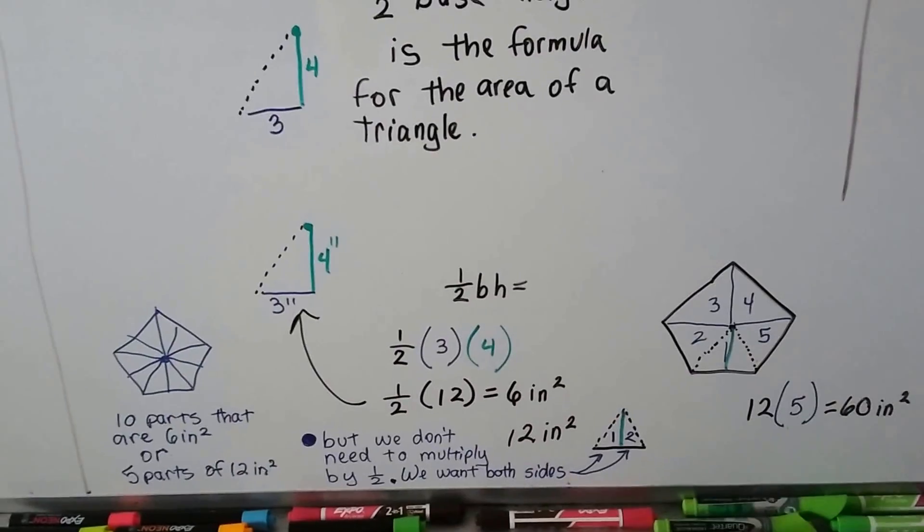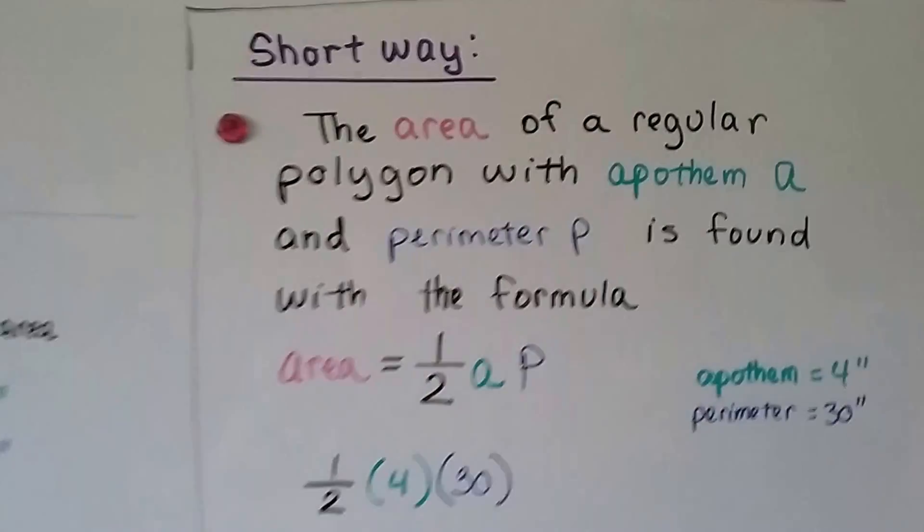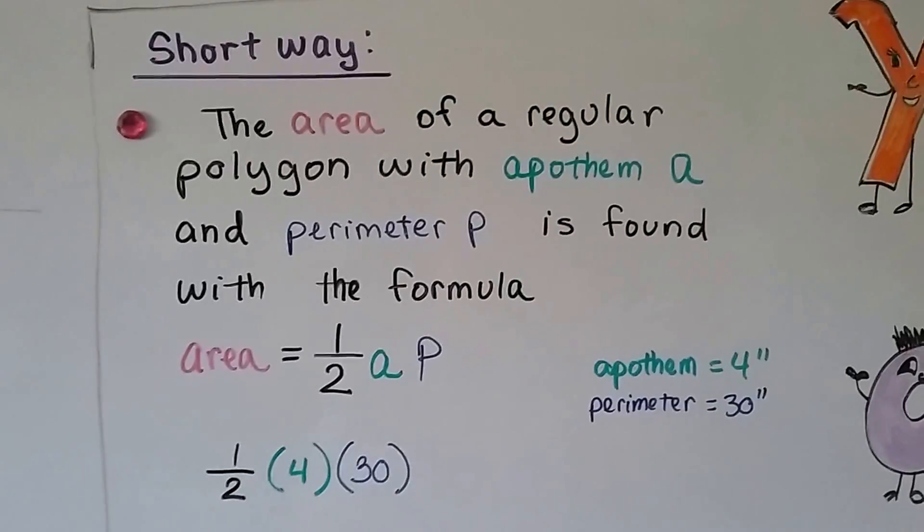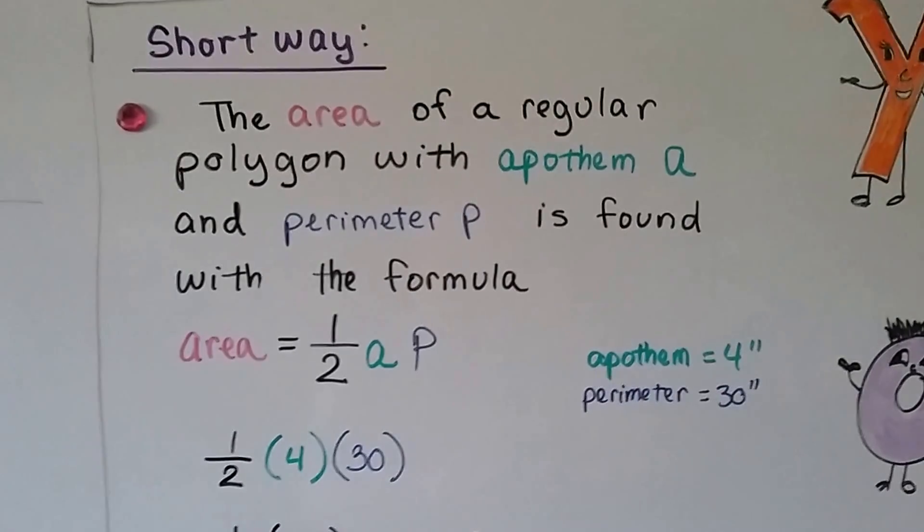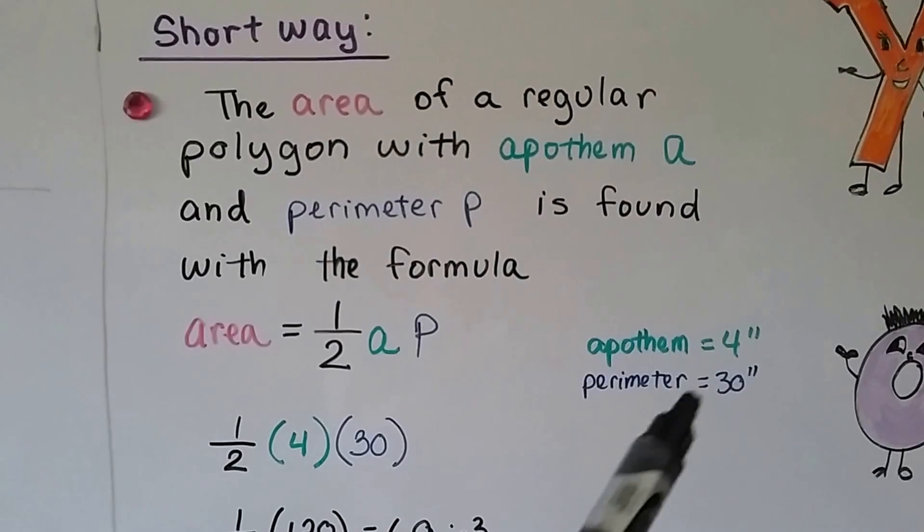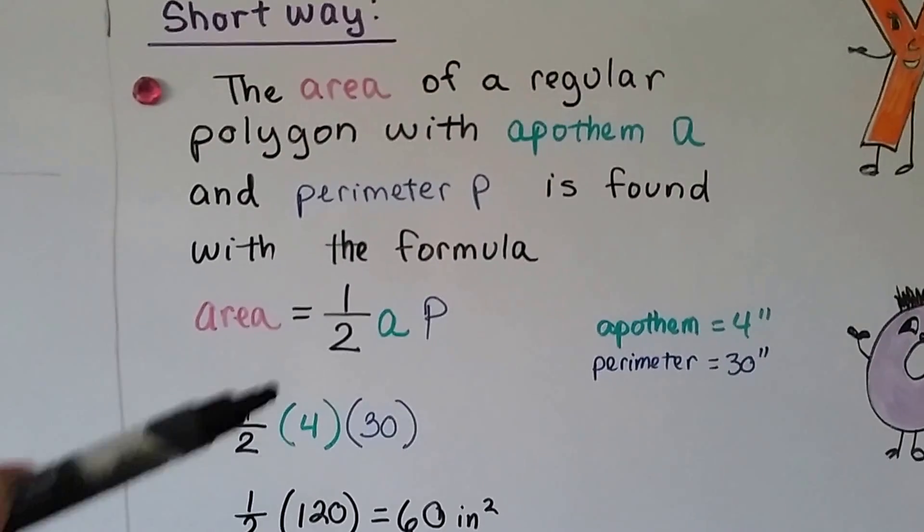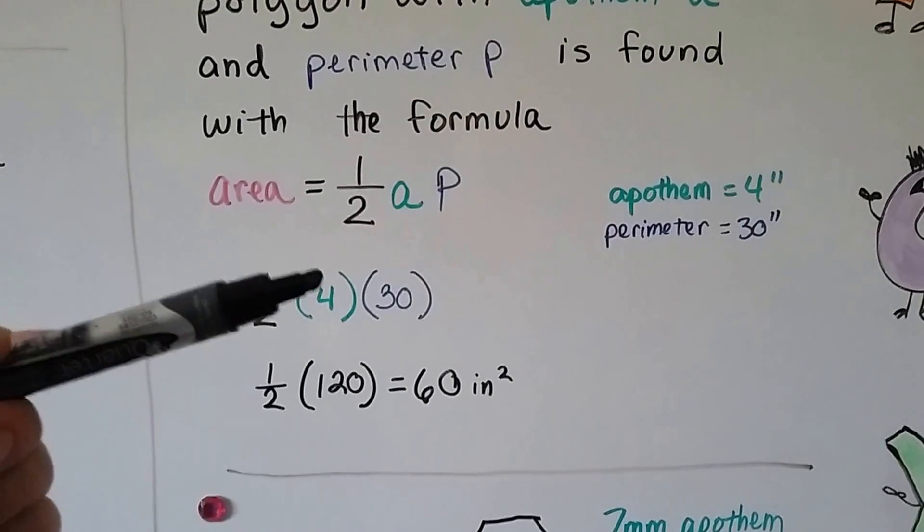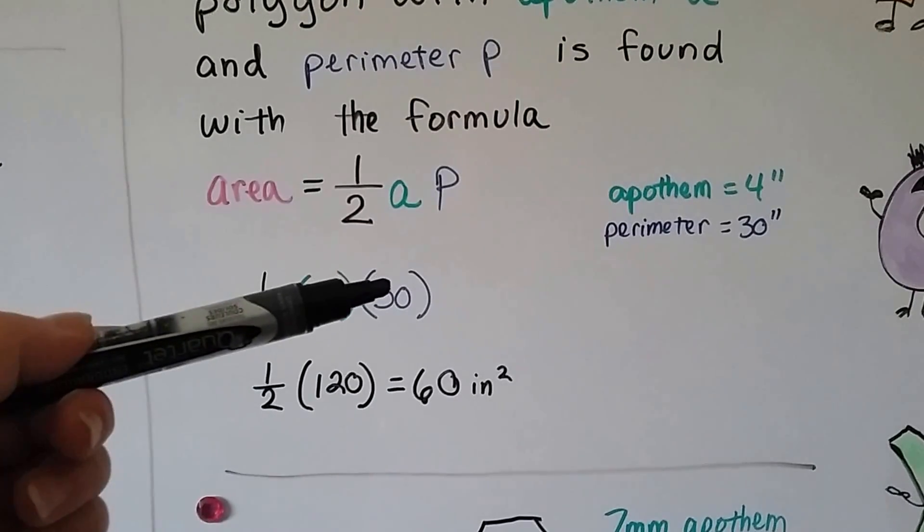Now, that's great and it's accurate and we can do that, but there's a quicker way. There's a shorter way. The area of a regular polygon with an apothem of A, so we're going to say four inches, and perimeter P, we're going to say 30 inches, is found with this formula, half AP. All you have to do is multiply the apothem times your perimeter.